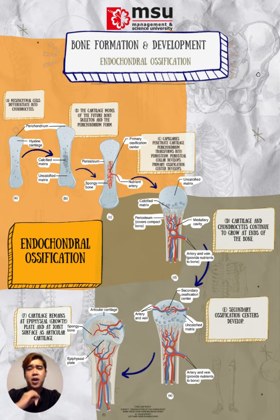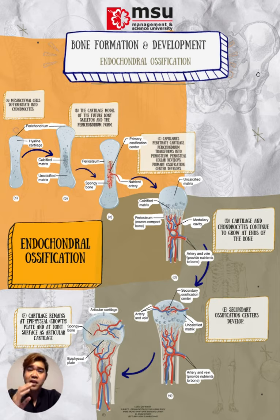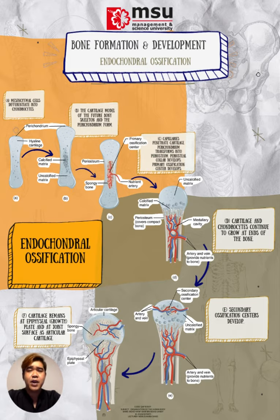While these changes are occurring, chondrocytes and cartilage continue to grow at the ends of the bone, increasing the bone's length. The bone is replacing cartilage in the diaphysis. By the time the fetal skeleton is fully formed, cartilage only remains at the joint surface as articular cartilage and at the epiphyseal plate, which is responsible for longitudinal growth. After birth, the same sequence of events occurs in the epiphyseal regions, referred to as secondary ossification centers.